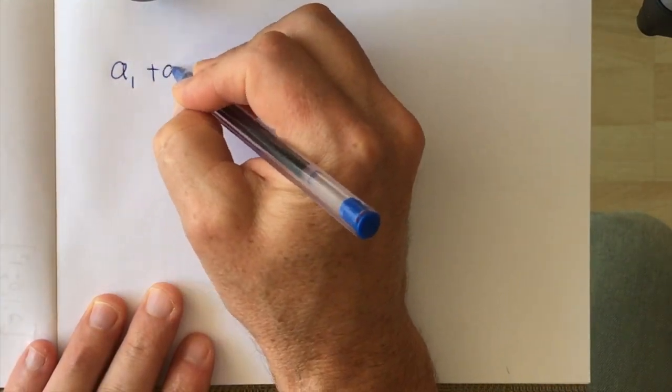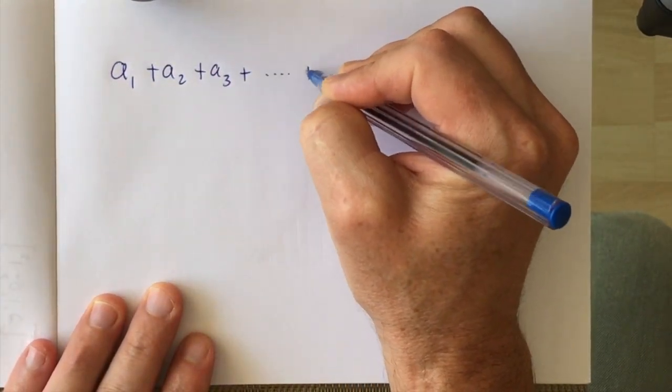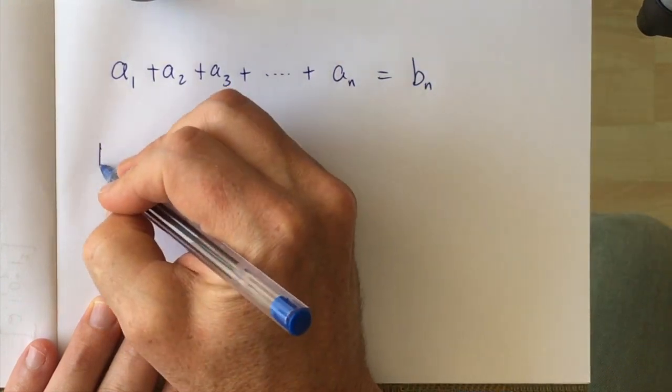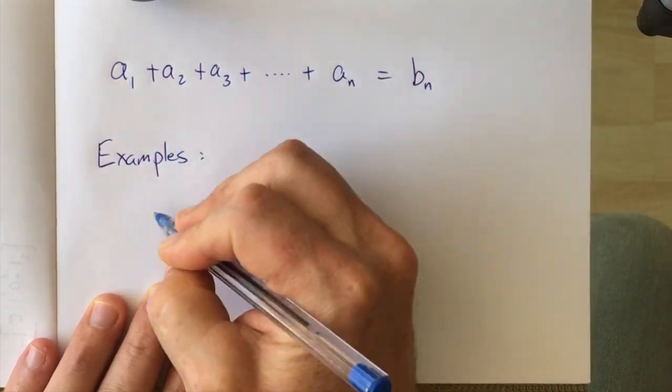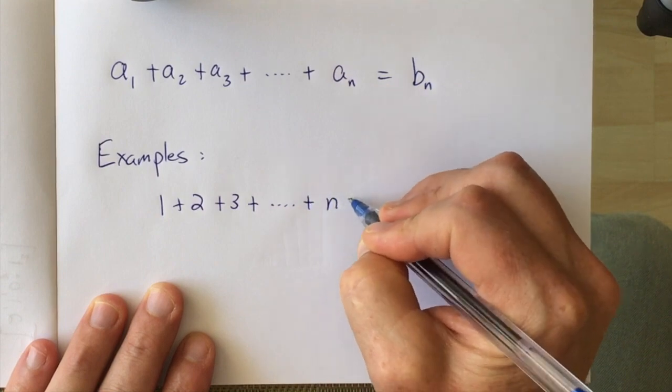I want to show you how to demonstrate a sum of the form a1 plus a2 plus a3 plus an is equal to bn without using induction.